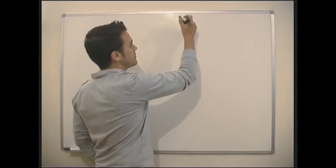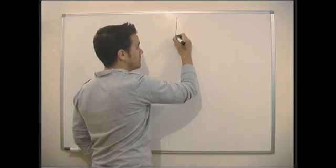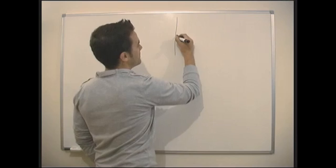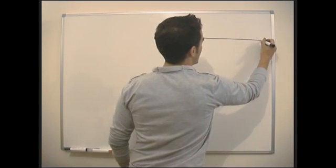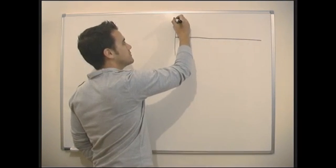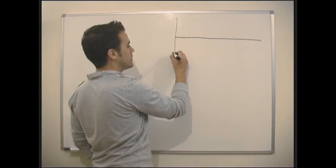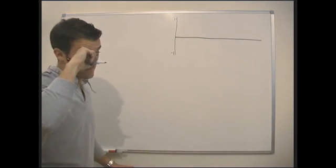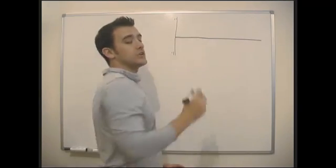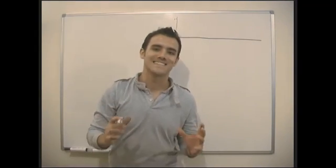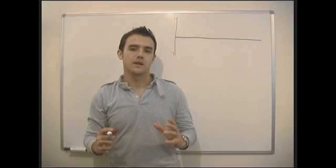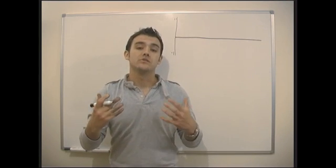So sine and cosine are functions, and we can draw them on a graph. The maximum they go up to in the y plane is 1, and the minimum they go to is minus 1. Sine and cosine both look exactly the same. They're both what is known as a sine wave.